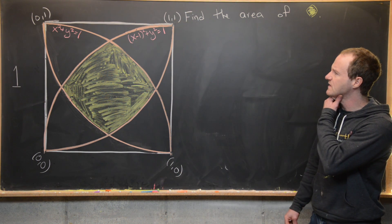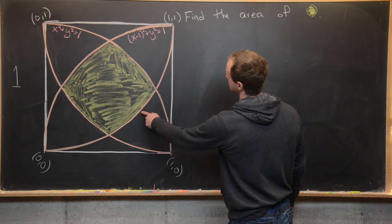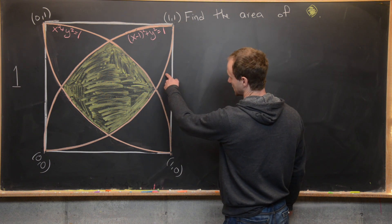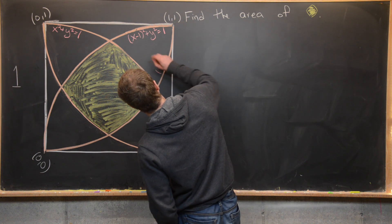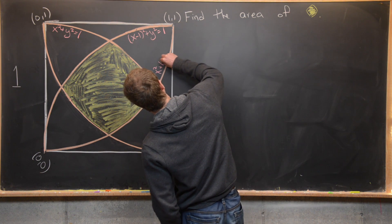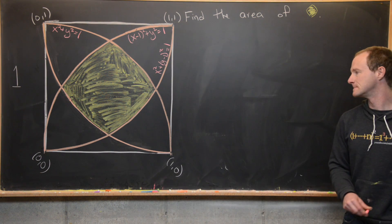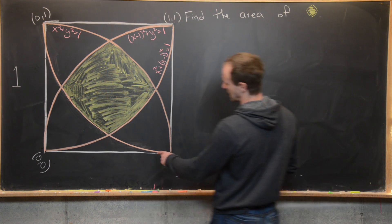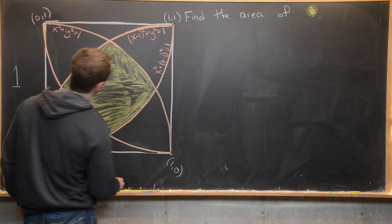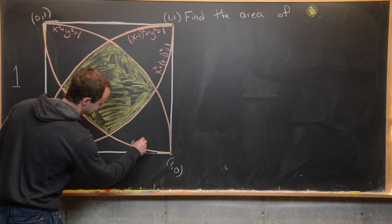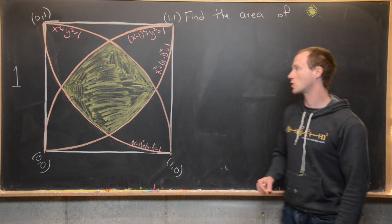We need one more circle equation. The circle with radius one and center (0, 1) has equation x² + (y - 1)² = 1. And for completeness, the last circle with center (1, 1) has equation (x - 1)² + (y - 1)² = 1.